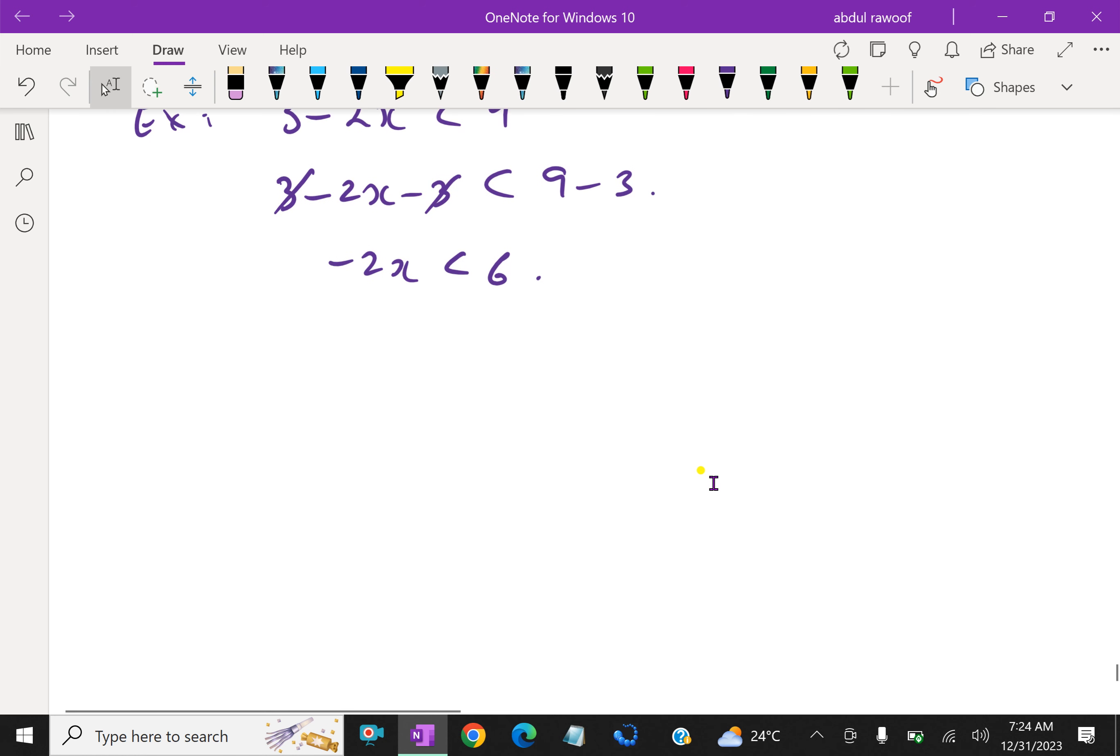Here, important note. If you divide inequality equations on both sides by a negative number, we have to interchange the sign to greater sign like this. So minus 2x divided by minus 2, 6 divided by minus 2. Note this point.